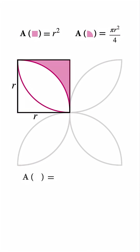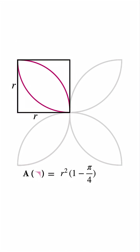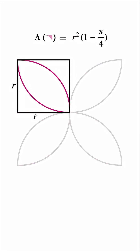Now look at the remaining part of the square. We do not have a direct formula for it, but we can get it by subtracting the quarter circle from the square. So the area is r squared minus pi r squared over four. Factor out r squared, and we get r squared times one minus pi over four. Notice this area appears twice, because the two corner sections are identical.